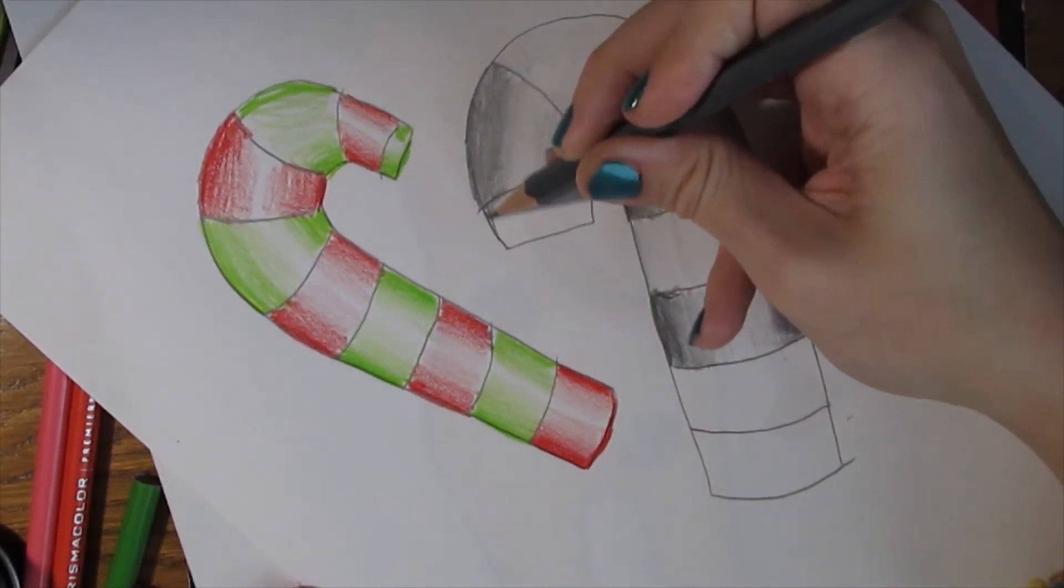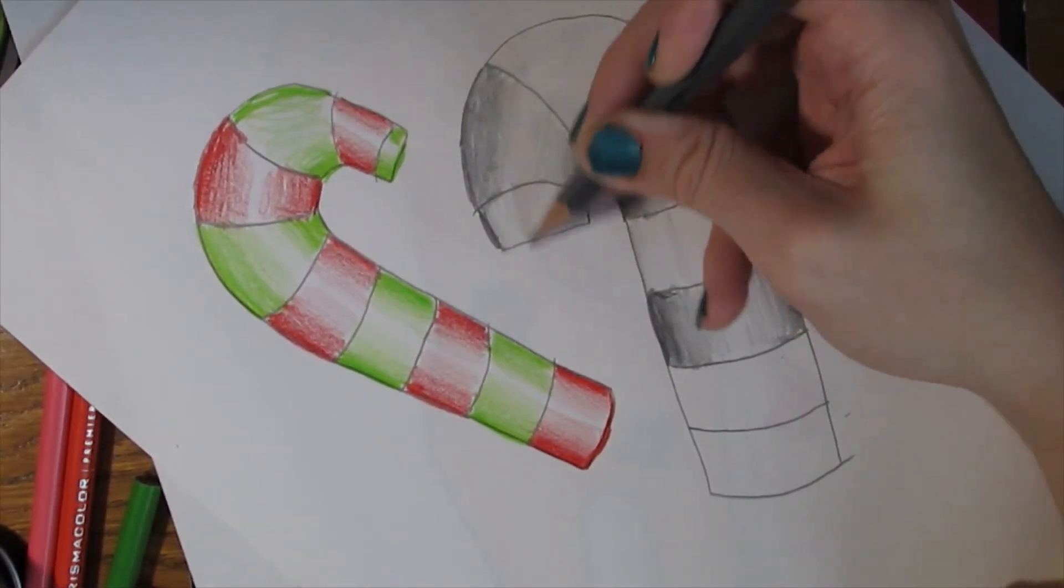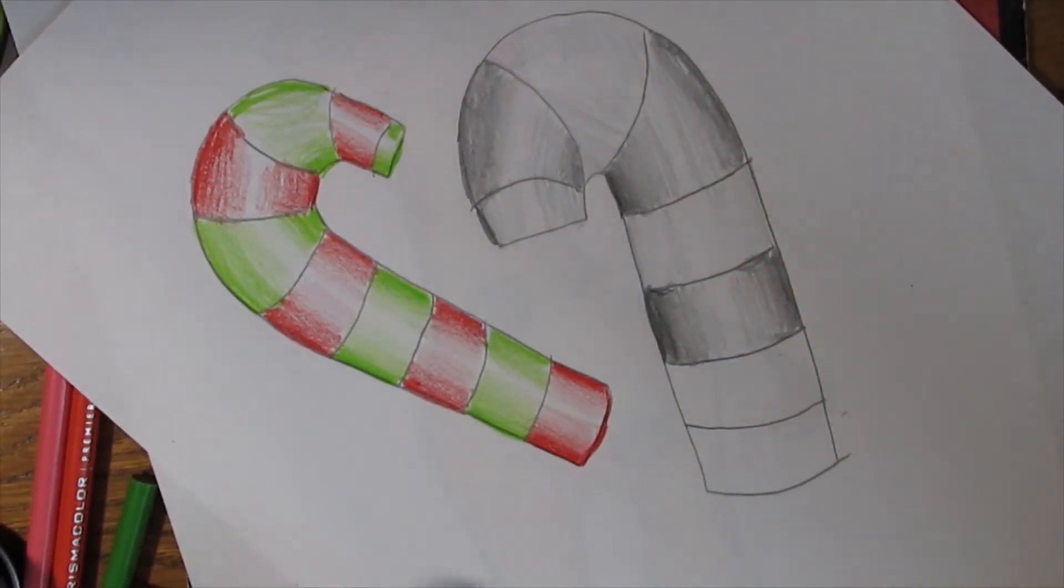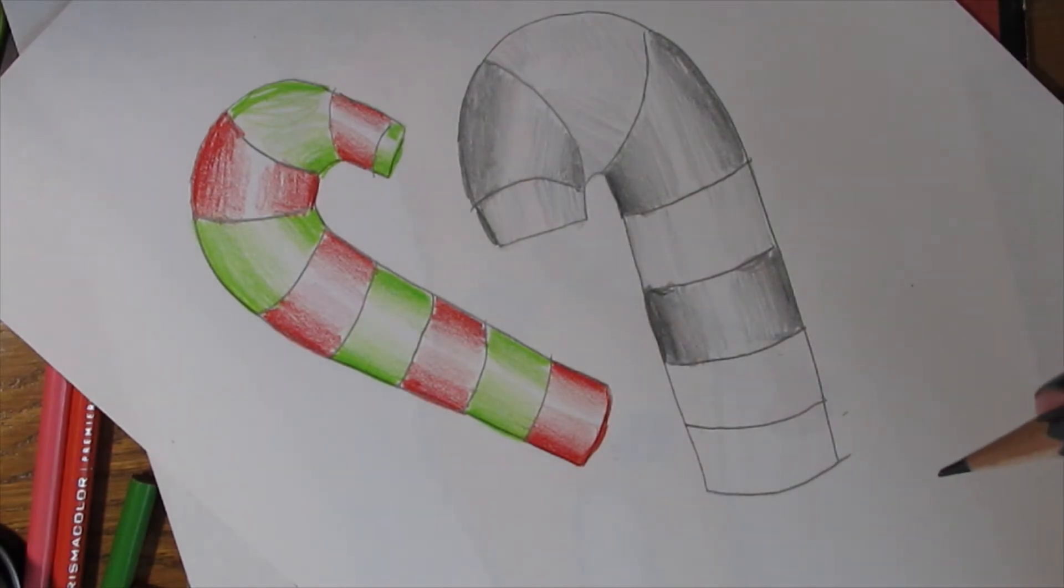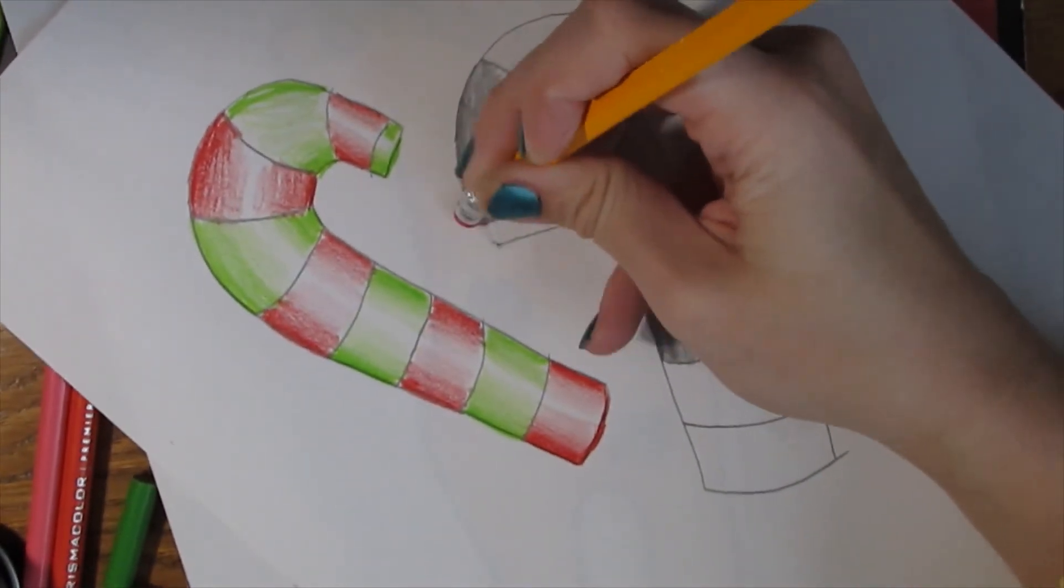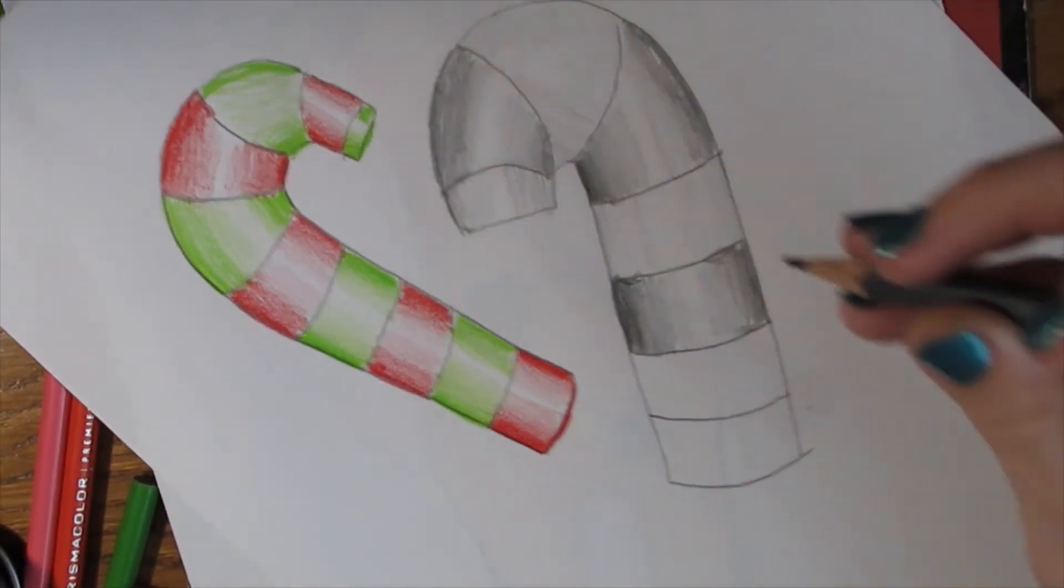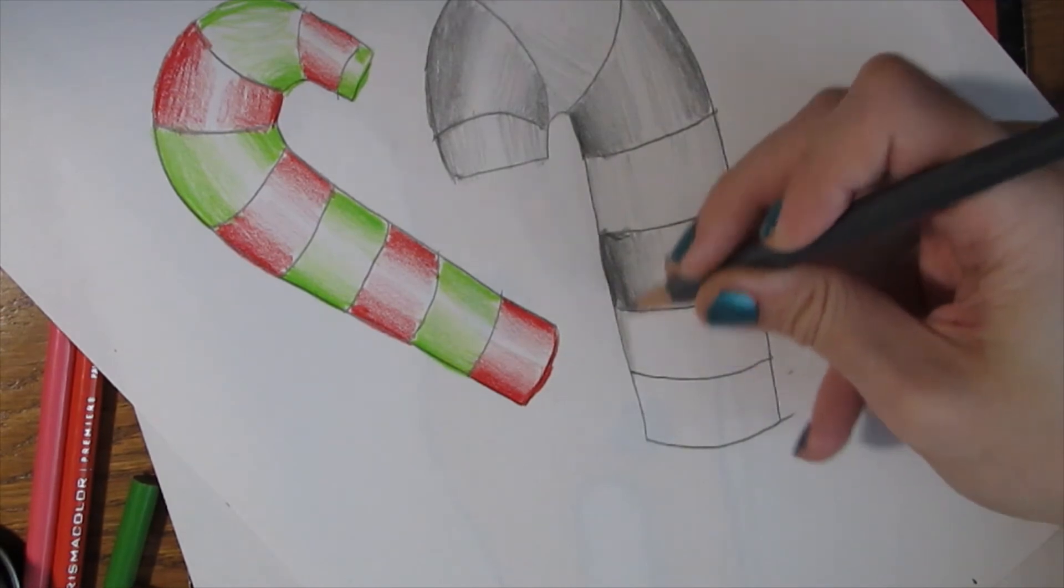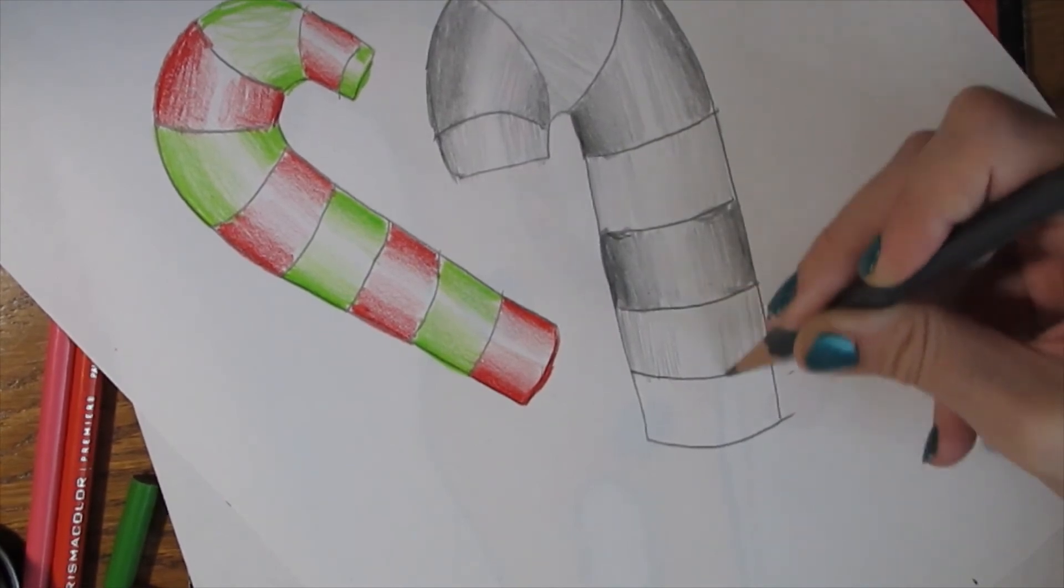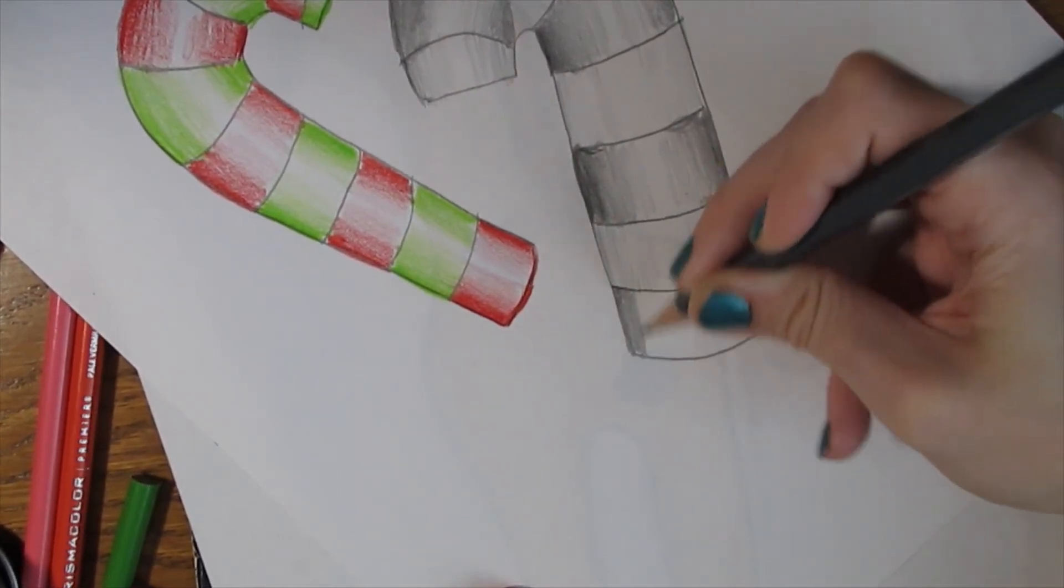When it comes to drawing we change our value just with the pressure we use. Painting on the other hand - when we do painting we get lighter values by adding white paint if we were using acrylics, and if we were using watercolor we would lighten the value by adding more water. So for drawing it's the pressure that we use, for painting with acrylics it's adding white paint to lighten it up, and with watercolor it's adding more water to dilute it.